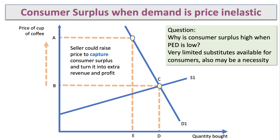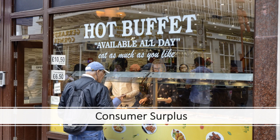By raising the price, the seller loses some sales — from D down to E — but captures a large area of extra revenue, turning consumer surplus into additional revenue and profit. A monopolist with market power could in theory increase the price when elasticity of demand is low, because they know there's a lot of consumer surplus to convert into producer surplus.